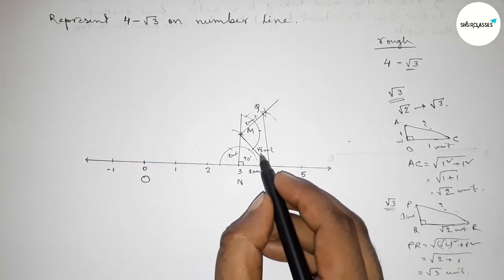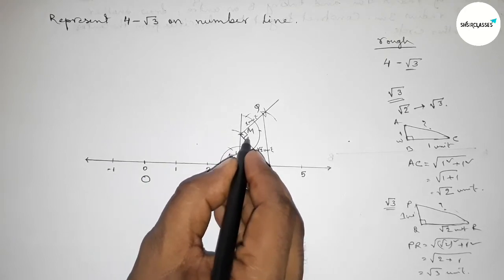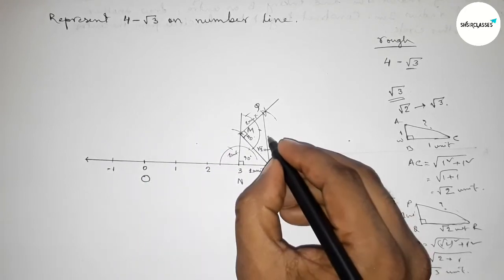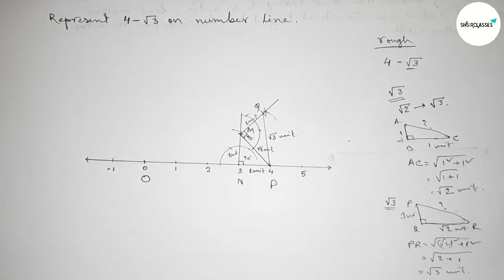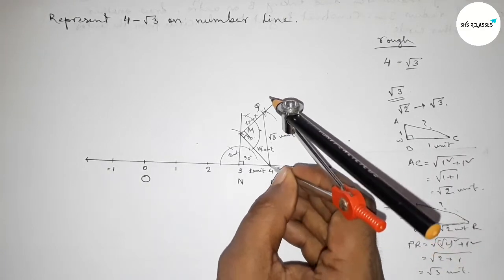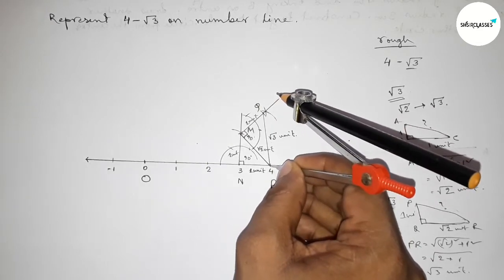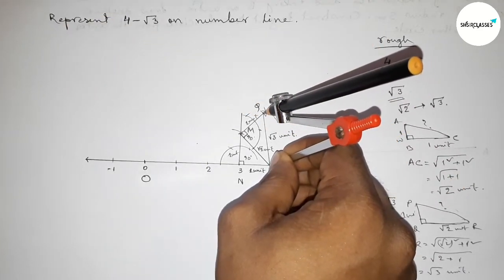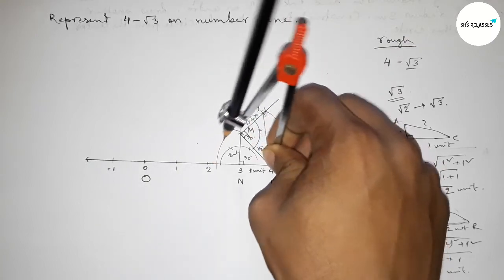This is a 90 degree angle. Now we have to subtract root 3 from 4. Taking the length PQ equal to root 3 units using the compass.